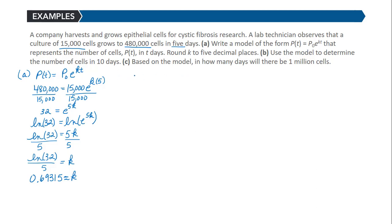Now our model, which we haven't yet written - let me write that now. So our model is P(t) equals our initial value, which is 15,000, times e to the 0.69315t.